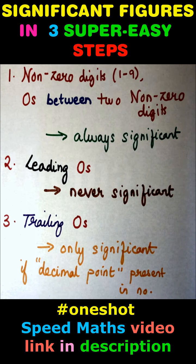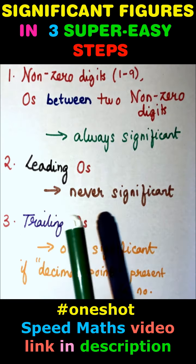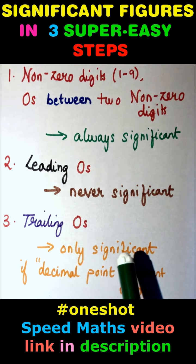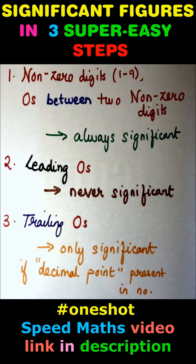Rule 2: Leading zeros are never significant. Rule 3: Trailing zeros are only significant if a decimal point is present in the number.